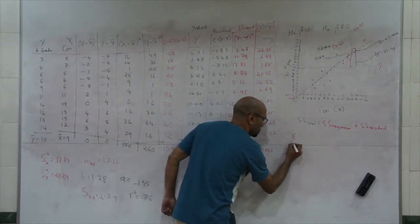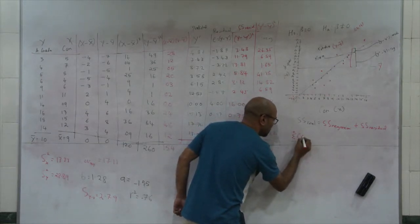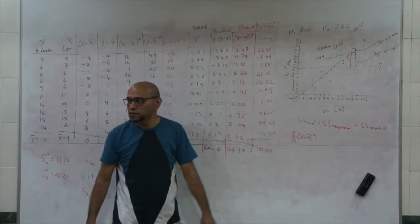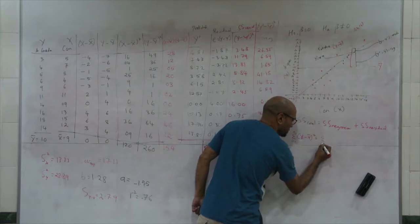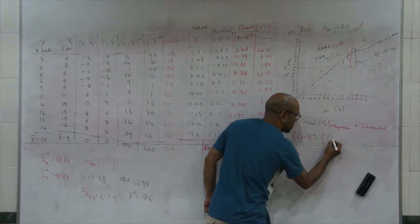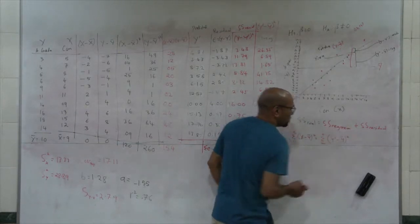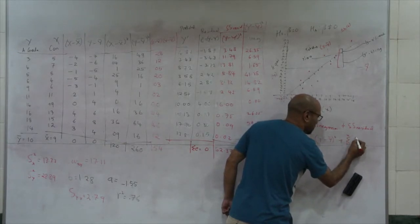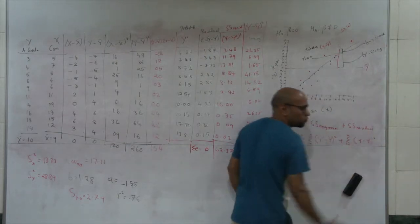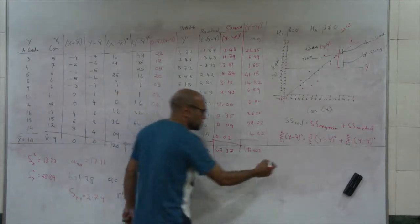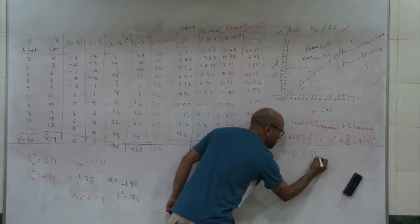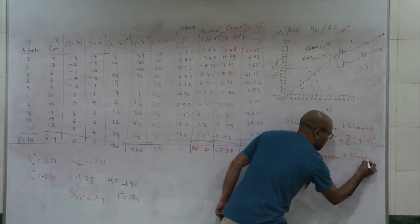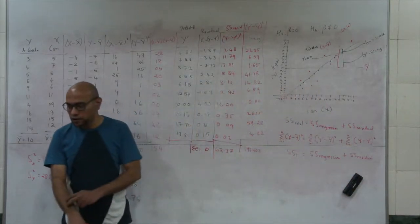Sum of squares total is the summation from i=1 to n of (y minus y-bar) squared — this is the actual deviation in y. Sum of squares regression is the summation of (y-prime minus y-bar) squared, and sum of squares residual is the summation of (y minus y-prime) squared. So: SST = SSR + SSResidual.